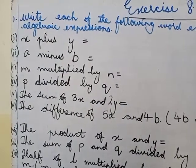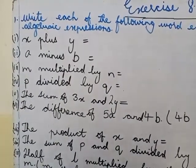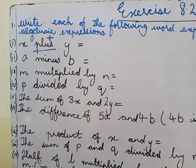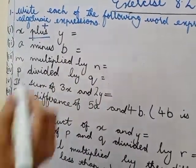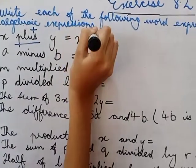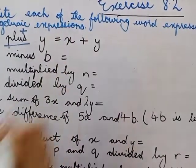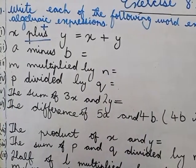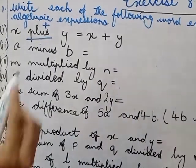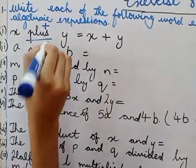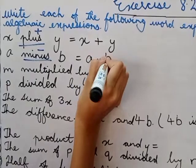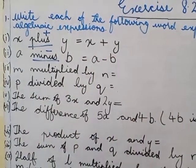We have to convert it into the sign. The sign of plus is like this, so we're going to write x plus y. Now the second part is a minus b. The minus sign is like this, we're going to write a minus b.